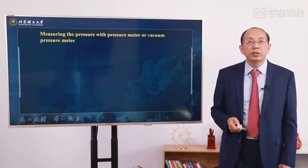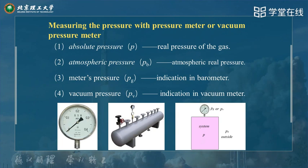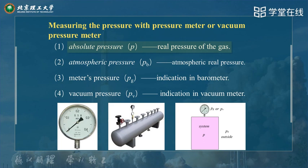How to measure the pressure? Because there are different cases — sometimes in the tank the pressure is larger, maybe larger than atmospheric pressure; sometimes the pressure in the tank is lower than atmospheric pressure. So there are different kinds of ways to express and test the pressure. First, we give a definition of absolute pressure. Absolute pressure is the real pressure of the gas in the tank — the force divided by the area. So absolute pressure is the true pressure of the gas.